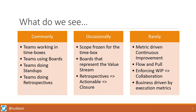Very rarely do we see metric-based continuous improvement. Implementation of flow and pull — people understand the concept, but there are very few teams who are actually able to execute pull-based execution. Similarly, very few people actually enforce WIP limits. They see the WIP limit violations but pretty much continue to move on and keep it as information only. And of course, business driven by execution metrics. So what we're going to talk about today is metric-driven continuous improvement — the focus for the next 50-odd minutes.